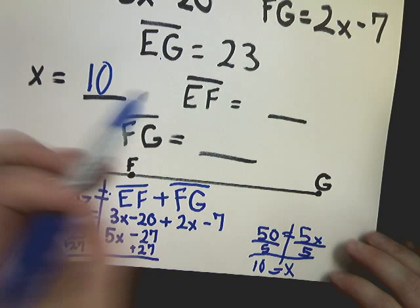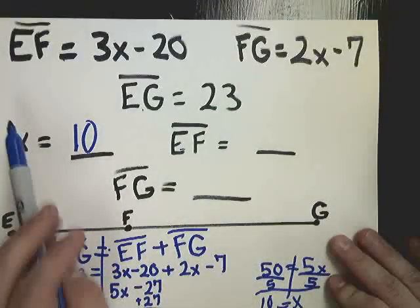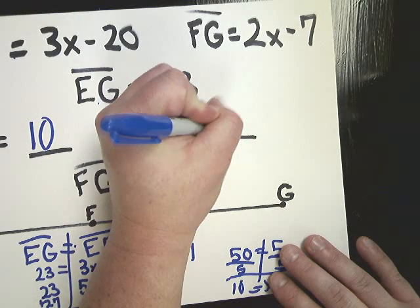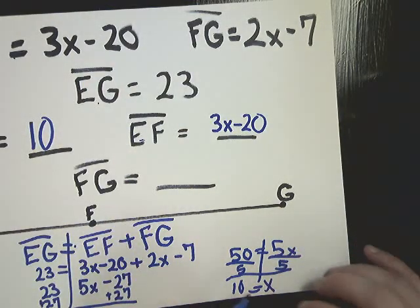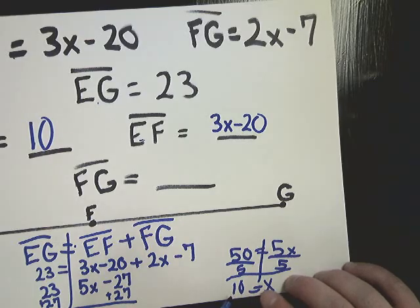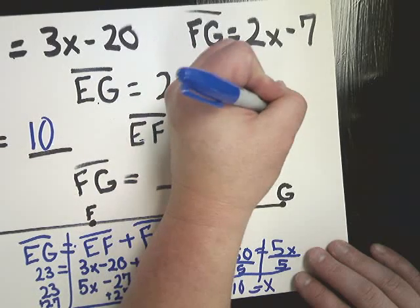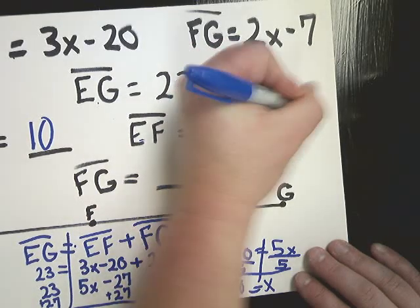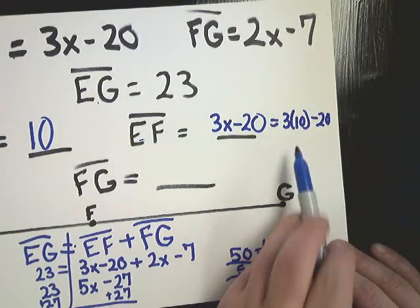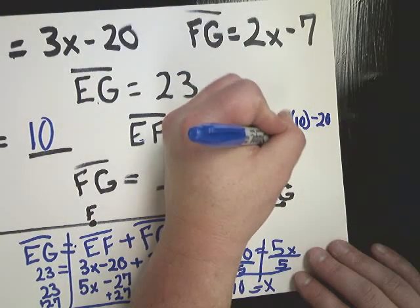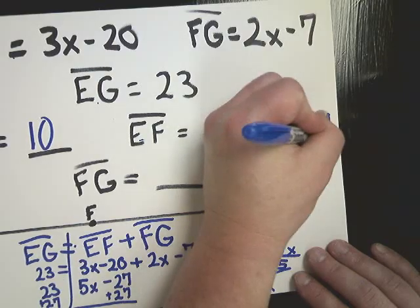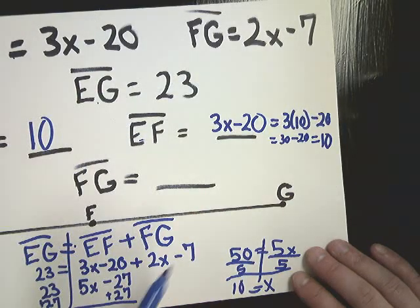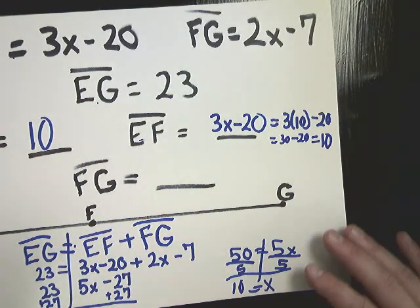If you were born on May 3rd of 1991 and I ask you what your birthday was, you may say 1991. Well it's the right answer but not to the question that I asked you. So make sure that you give the right answer to the right question. Now if they ask me what EF is, I know that EF is equal to 3X minus 20. So I need to write down 3X minus 20. To find the numerical value I just need to plug in the 10 that I know is the same as X. So it's really 3 times 10 minus 20. 3 times 10 is 30 minus 20 gives you 10. How ironic.